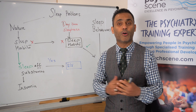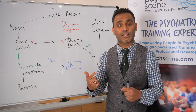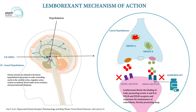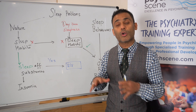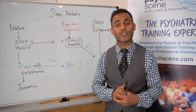There's also a new group of agents such as suvorexant and lemborexant — these are orexin antagonists. Orexin are the wakefulness neurons, so orexin antagonists block these and work through a different mechanism. Due to this, the risk of dependence is lower on these agents, making them useful agents to consider.